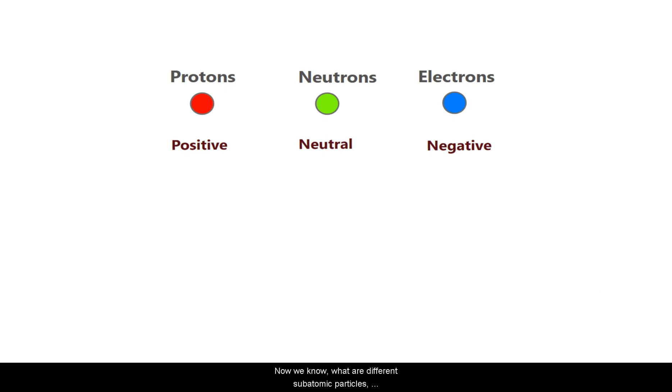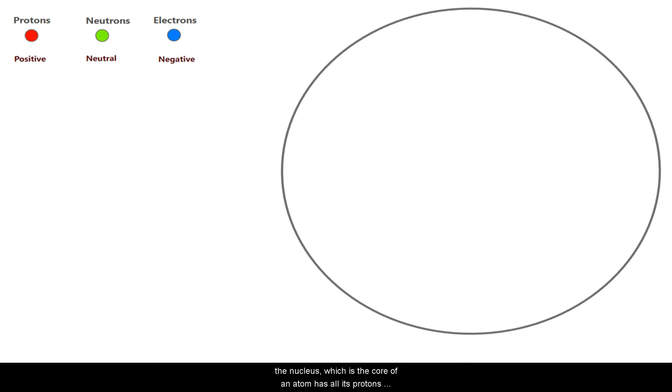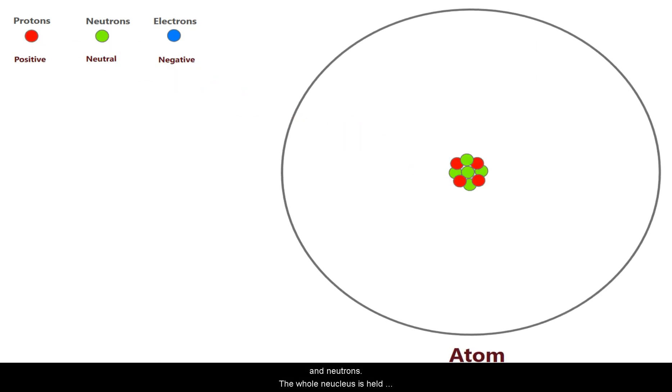Now we know what are subatomic particles. Now let's see their position in an atom. The center part of an atom is called nucleus. The nucleus which is the core of an atom has all its protons and neutrons. The whole nucleus is held together by a strong force and this force is responsible for binding protons and neutrons together in a nucleus. And this force is recognized as one of the four basic forces of nature.